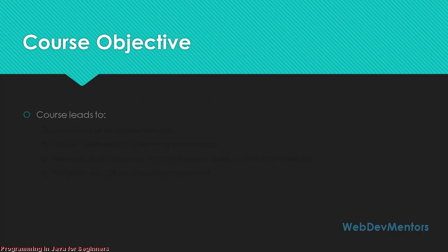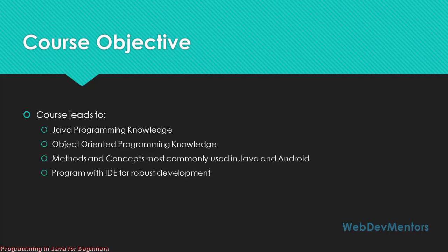The course objectives include building Java programming knowledge and object-oriented programming knowledge. OOP knowledge is important because many languages — like C#, C++, PHP, and others — are concentrated on OOP concepts. The course also covers methods and concepts used in Android development, and will give you an introduction to IDEs — integrated development environments — and how to program using them.